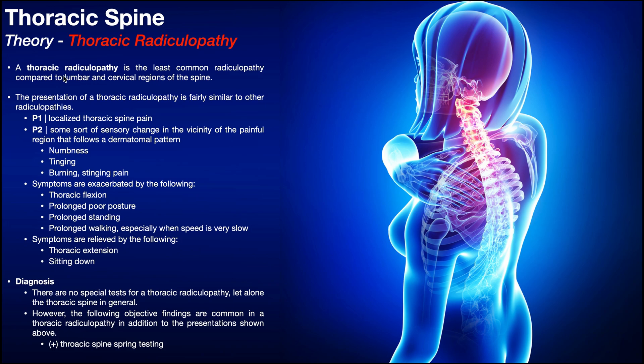A lumbar radiculopathy generally affects one or both legs. Obviously you need your legs to function properly to be able to do ADLs — you have to be able to walk, stand, stairs, etc. If somebody has a cervical radiculopathy, that usually affects one or both arms. You've got to have your arms to be able to do ADLs effectively, whether it's chores around the house, driving a car, etc.